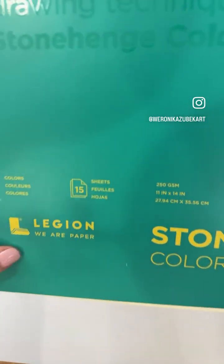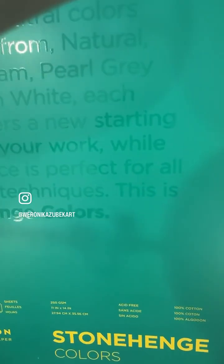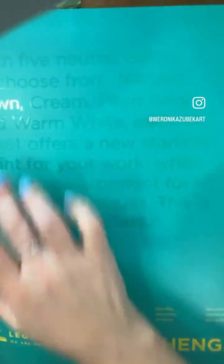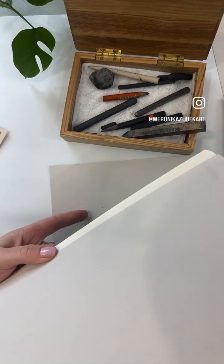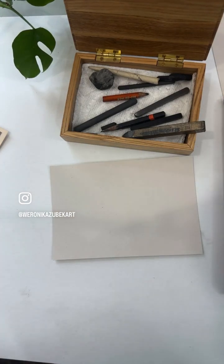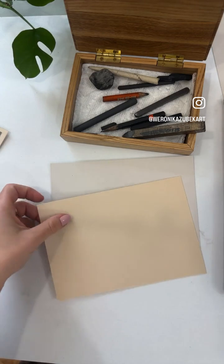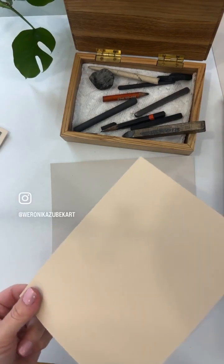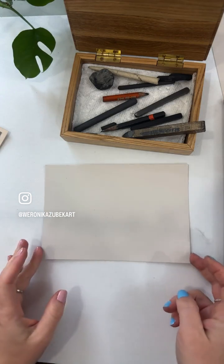As for paper, I'm using Stonehenge Colors by Legion. I'm using the big 11-by-14 sheets and I cut them down to get four 5-by-7s out of each sheet. It comes in different colors — the one I'm using today is gray. They also have a warm white that's a little peachy, a bright white, a creamy yellowish one, and the one I used the last few days is this more antique-looking one. Today we're using gray.